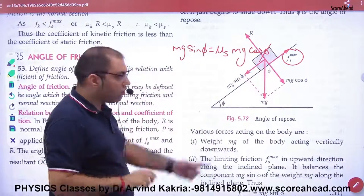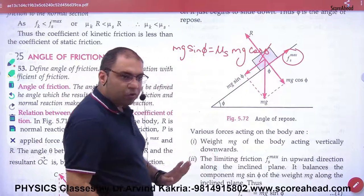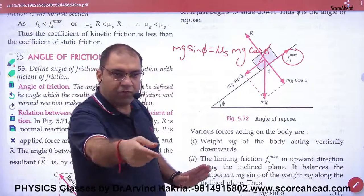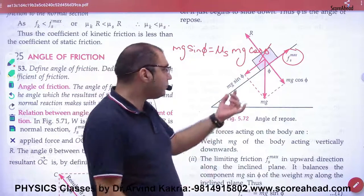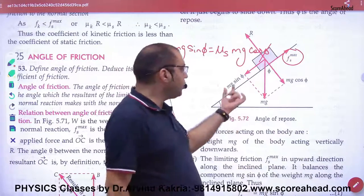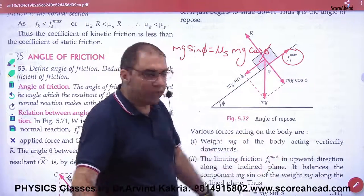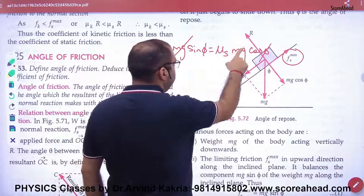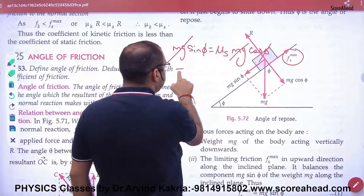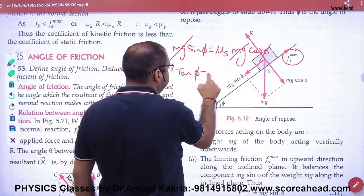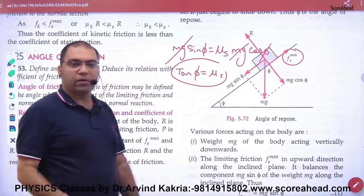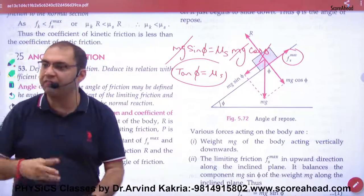Normal reaction on inclined plane, what is the value? Mg cos phi. So because the body is just able to move, it is a little tilted. There's no acceleration, so the force going down and the force opposing are equal. So when you equate it, mg, mg cancel. Sin over cos gives tan phi.